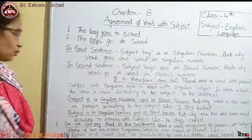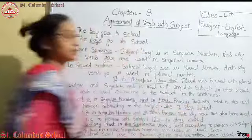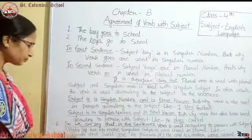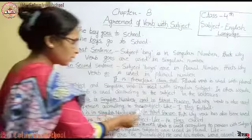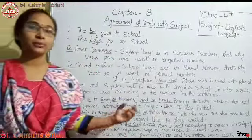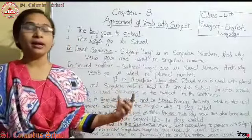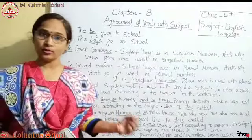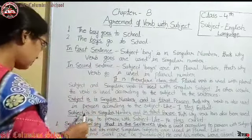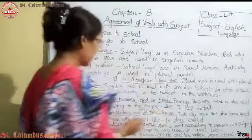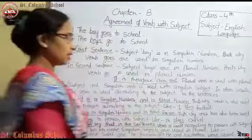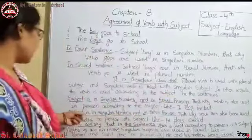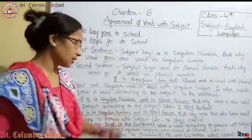In other words, the verb is used according to the subject in the sentence. Subject is in singular number and in first person - जैसे I, my। He, she third person हैं, and you or your second person हैं। जब subject singular number में हो और first person में हो, तो verb भी person के according use होती है, subject के according।